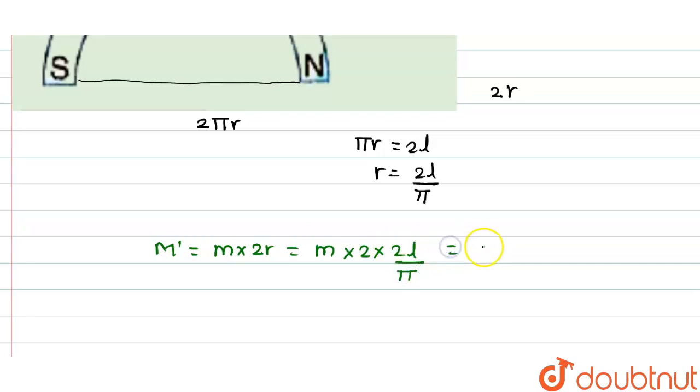Since m times 2l equals capital M, it will be 2 times capital M divided by π. This is the new magnetic moment of the semicircular shaped magnet. Thank you!